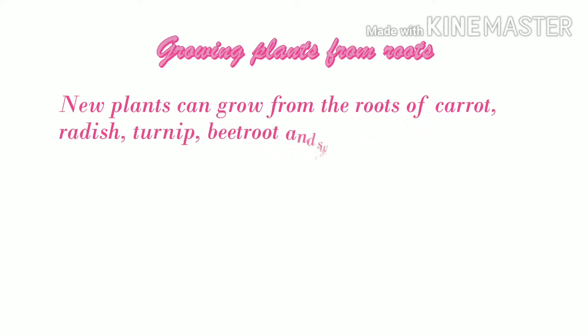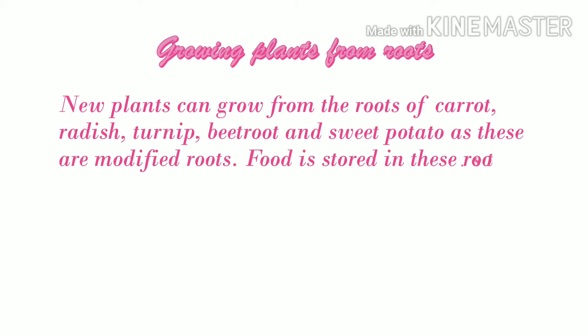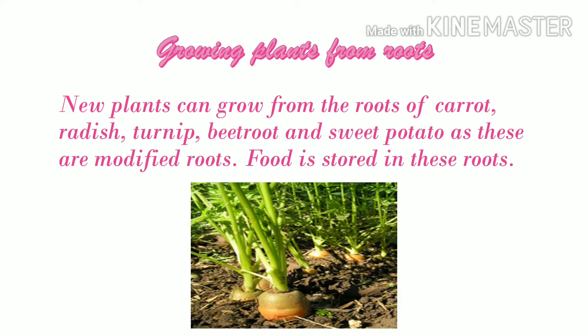Growing plants from roots. New plants can grow from the roots of carrot, radish, turnip, beetroot, and sweet potato as these are modified roots — food is stored in these roots. Modified roots can be propagated vegetatively when planted in the soil. The buds present on the roots grow as a leafy shoot called slips above the ground and adventitious roots below. Each slip gives rise to a new plant.